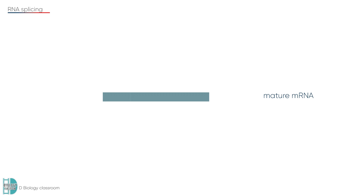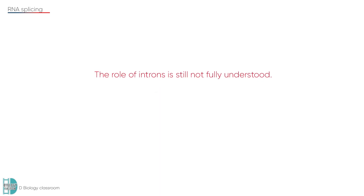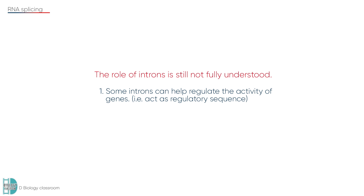You may wonder why introns exist if they have to be removed anyway. Well, the role of introns is still not fully understood. However, we know that some of the DNA's introns can help regulate the activity of genes. It's also allowed a process called alternative splicing.